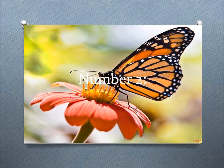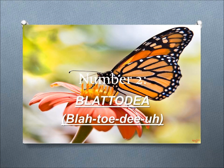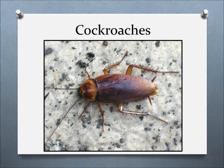Number 2, Blattodea. This order includes cockroaches, the mostly nocturnal insects that are adapted for swift running, can fly, and are pests in kitchens.